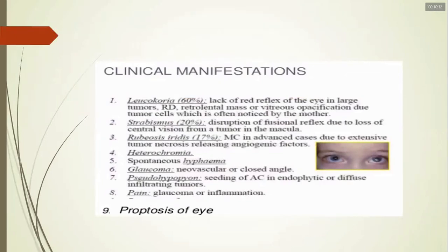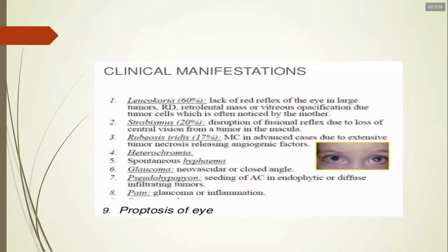Leukocoria (60%) is an absence of the normal red reflex. When you shine a direct ophthalmoscope into the pupil, you normally see a red reflex, but if you see a white reflex instead, that is leukocoria. It occurs with large tumors, retinal detachment, retrolenatal mass, or vitreous opacification due to tumor cells — often first noticed by the mother. There are several differential diagnoses for leukocoria, including retinal detachment and vitreous opacification, and you should know at least five to ten causes.